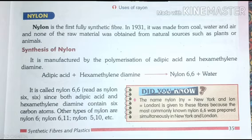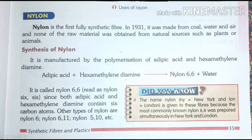Nylon is manufactured by the polymerization of adipic acid and hexamethylene diamine. Adipic acid reacts with hexamethylene diamine to produce nylon 6-6 plus water. It is called nylon 6-6 since both adipic acid and hexamethylene diamine contain six carbon atoms.